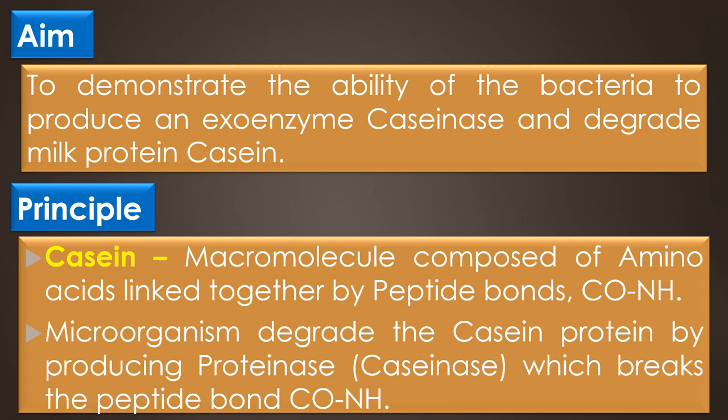Principle: Casein is a macromolecular compound of amino acids linked together by peptide bonds (CO-NH). Some microorganisms have the ability to degrade the casein protein by producing proteolytic exoenzymes called proteinase or caseinase, which breaks the peptide bond CO-NH.